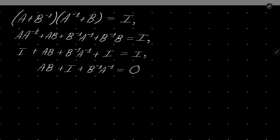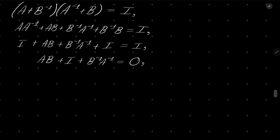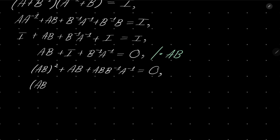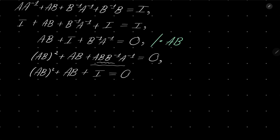I have subtracted the identity from both sides. Now what I wish to do is multiply both sides of this equation by ab. We have ab times ab, which is (ab) squared. Identity matrix times ab is ab. And last, ab times b inverse times a inverse equals 0. So we have (ab) squared plus ab plus identity equals 0. Now we know that our product ab satisfies this polynomial equation. Remember that we are talking about matrices, not just about numbers.